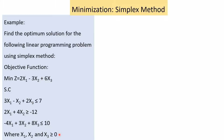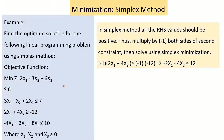Before moving to step 1, all right-hand side values must be positive. In the second constraint, there is a negative RHS value of negative 12, so we must convert it to positive 12. We multiply the second constraint by minus 1 on both sides, which also converts the greater than or equal to sign into less than or equal to, giving: minus 2x1 minus 4x2 less than or equal to 12.